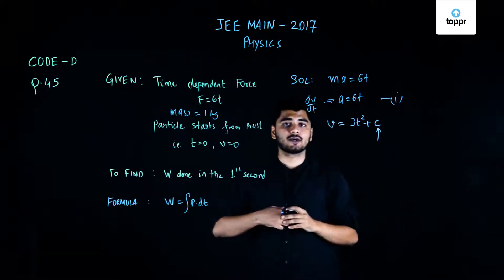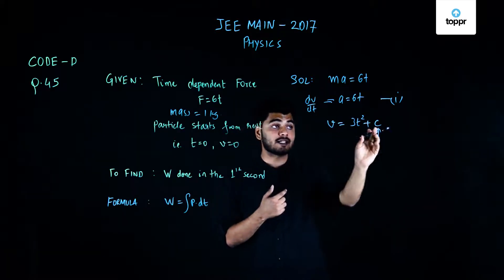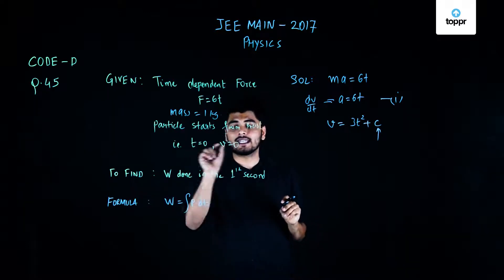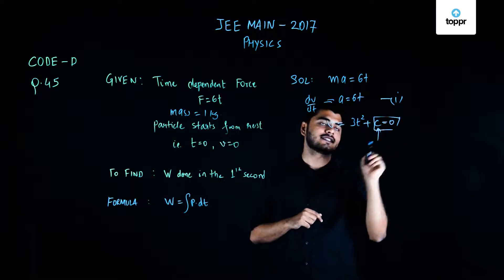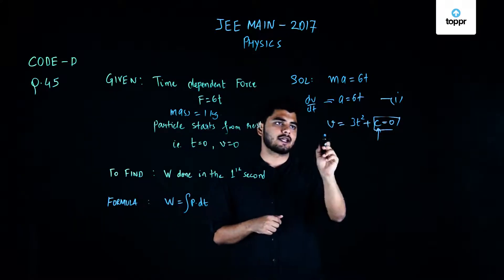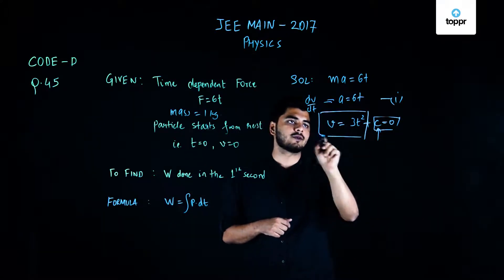Now in order to find the value of c, I'll use my condition which is given in the question that at t equals 0, my v equals 0, which would imply my c is nothing but effectively equals to 0. So I can write my v as v equals 3t square.